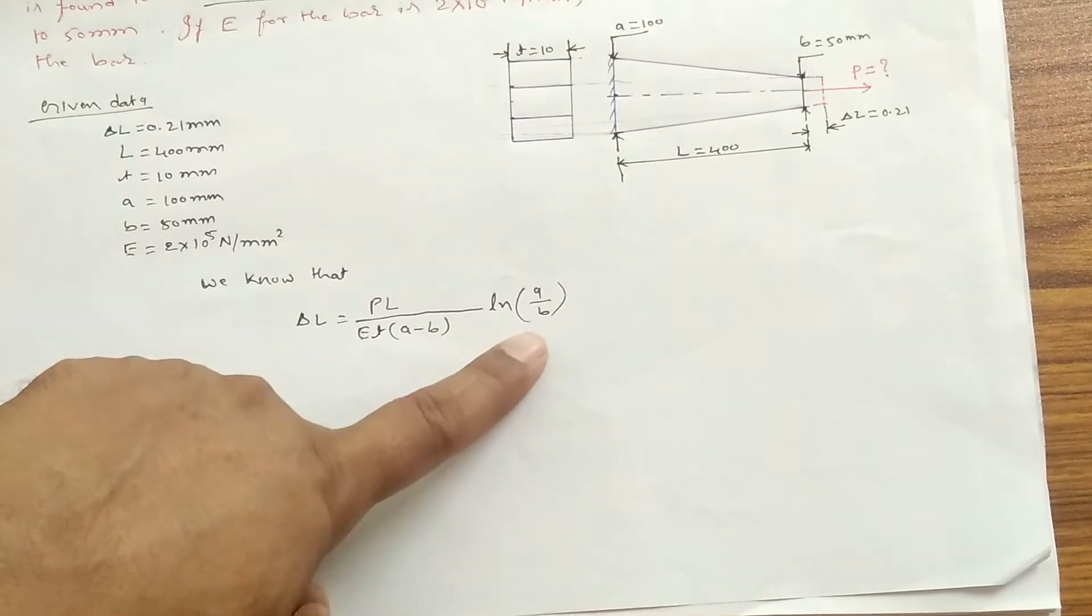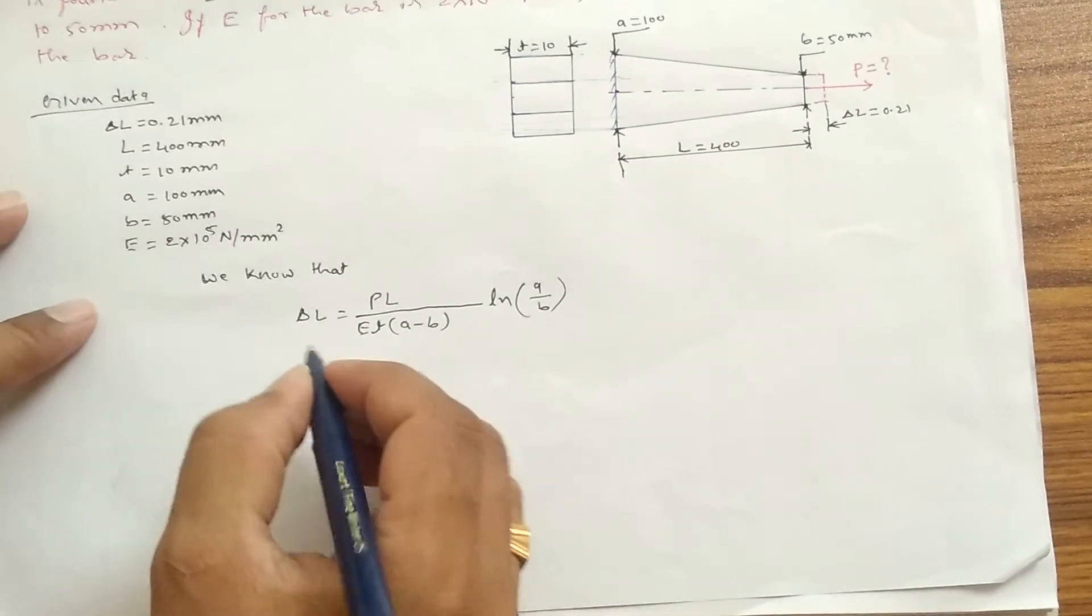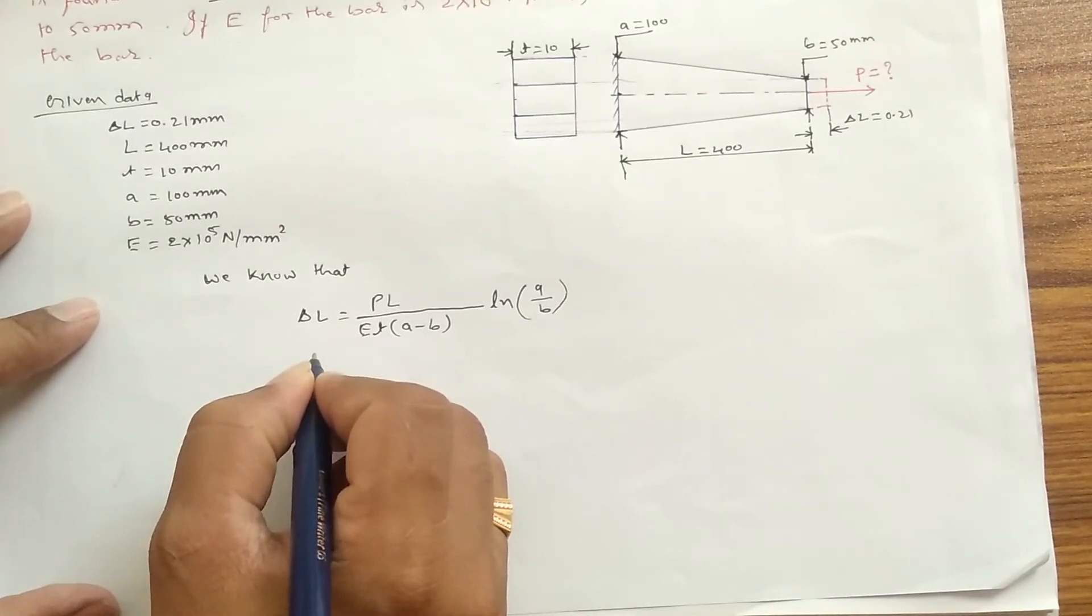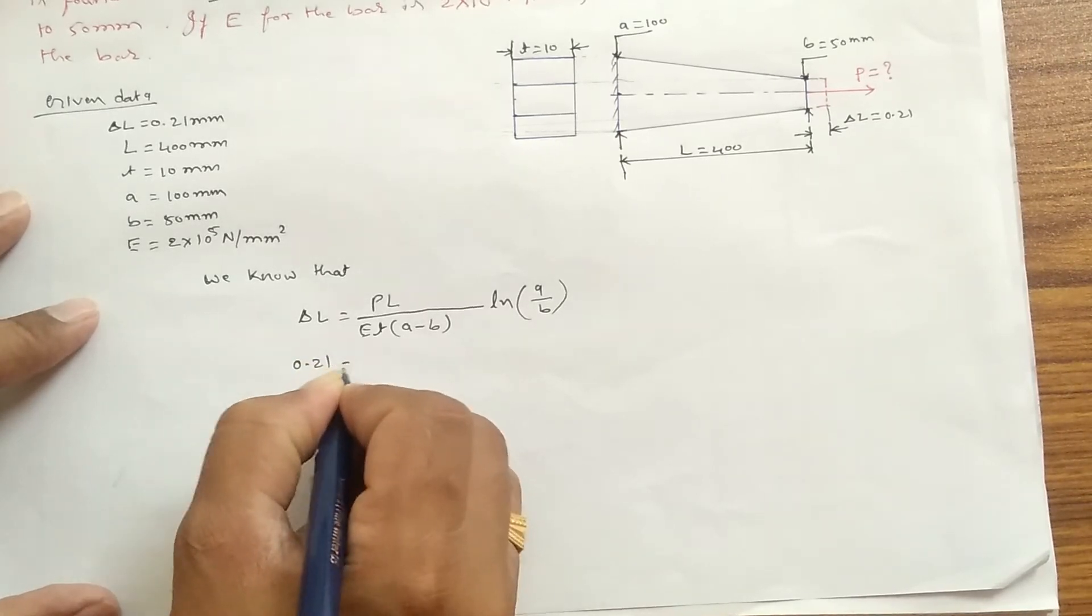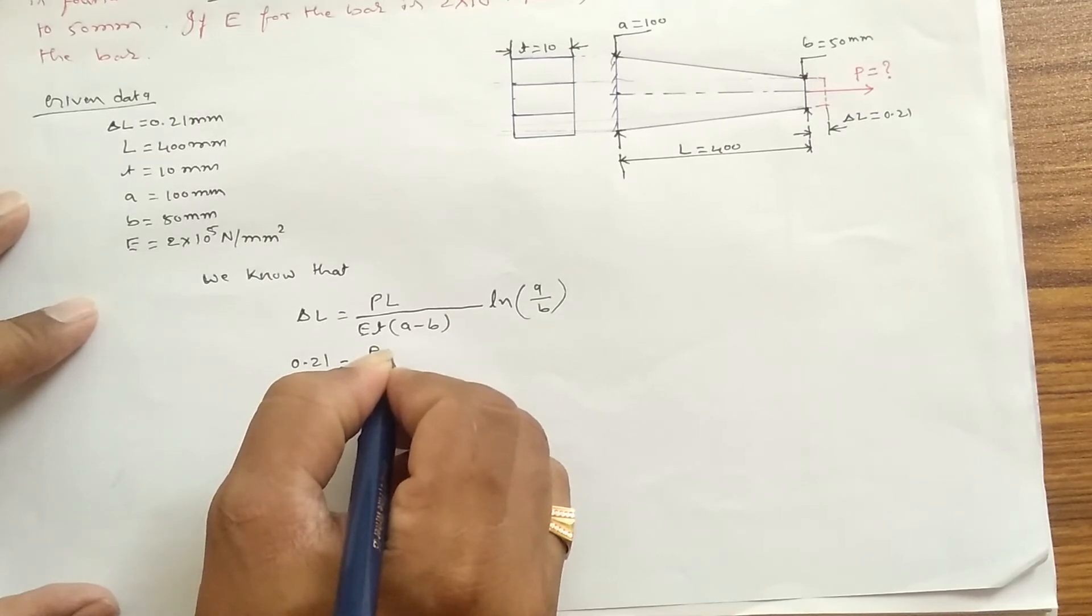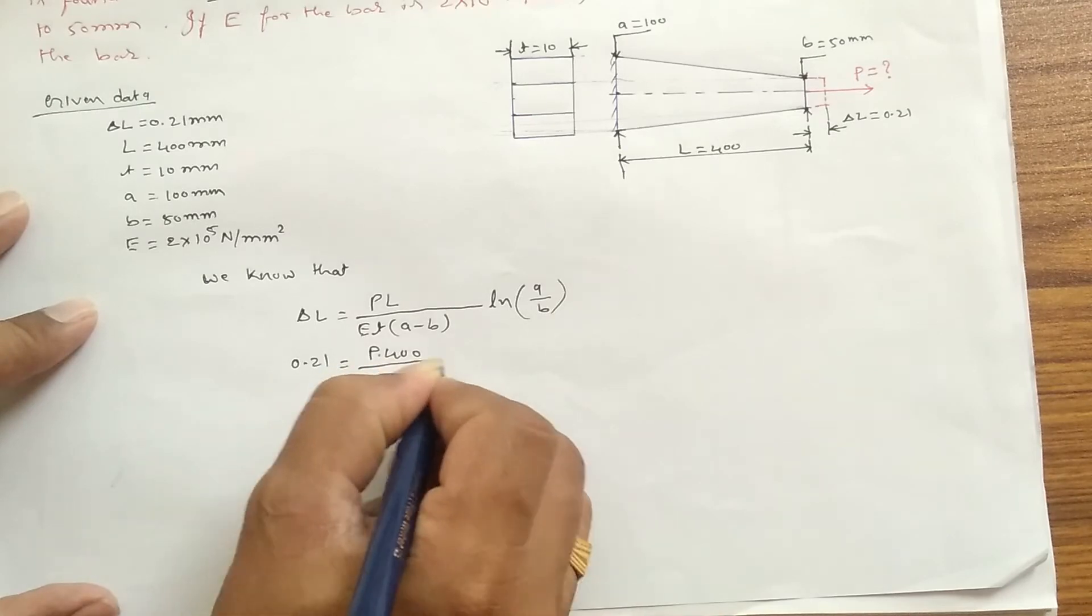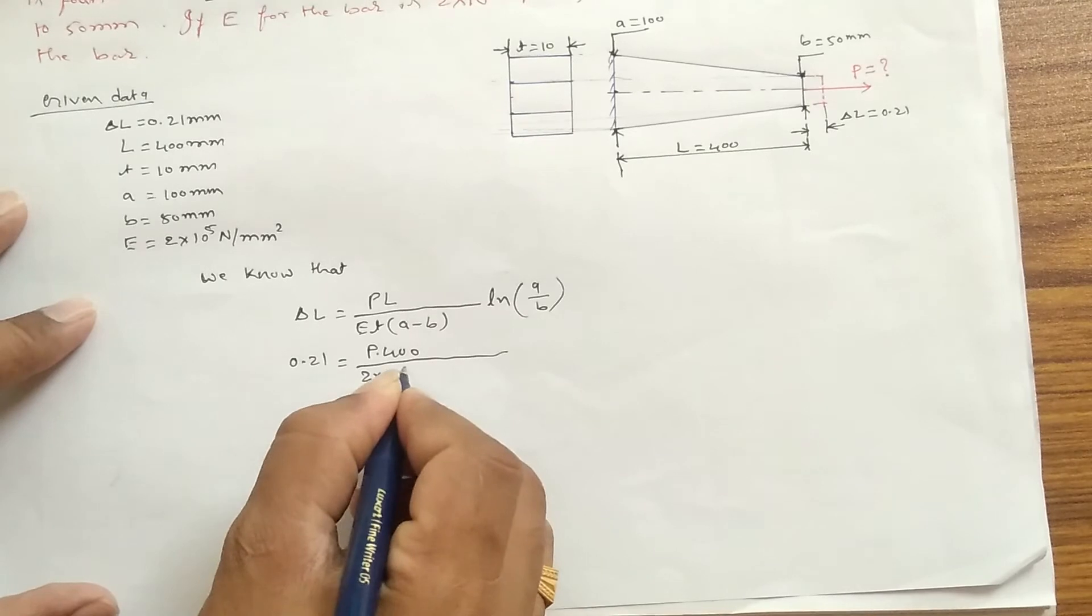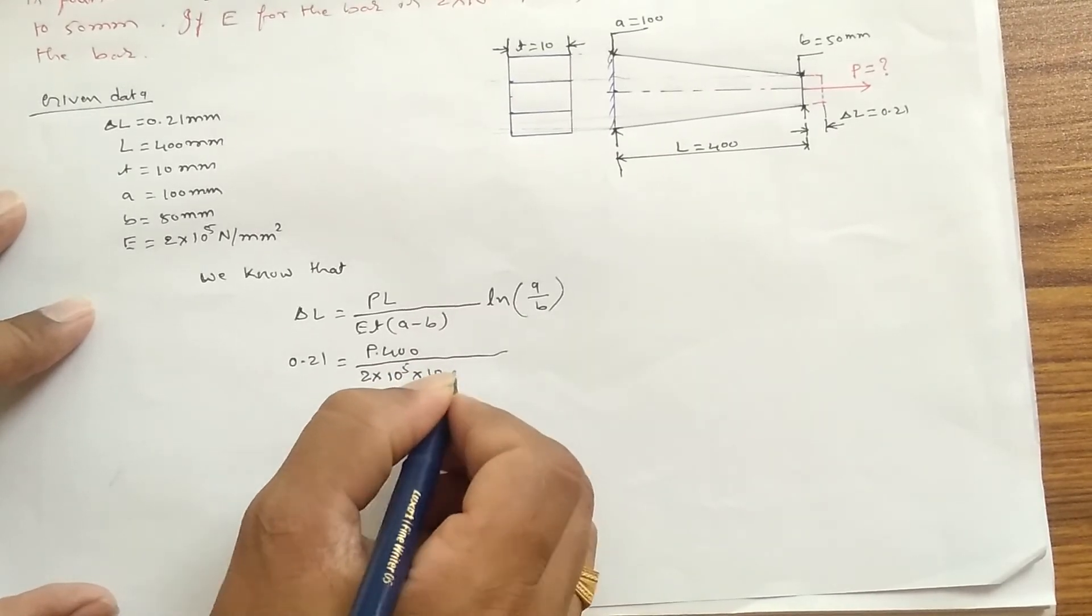Now let me substitute all the data here. So that is 0.21 = P is unknown, that we need to find out, × 400, E is 2 × 10^5, and thickness they gave...